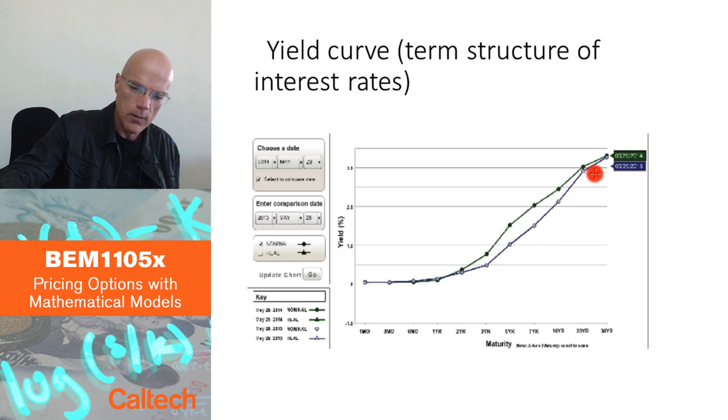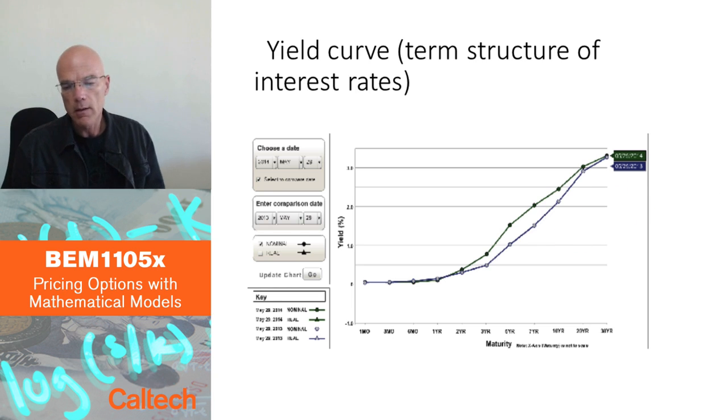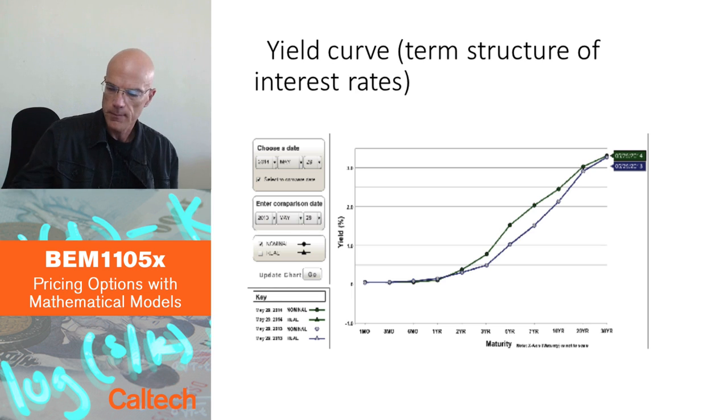This whole curve will be something today and something different tomorrow. So you have to model the whole curve moving along in time randomly in a way that is consistent with each other. You don't want to have arbitrage between bonds with different maturities. So it has to be carefully done. We will do that towards the end of this course. That's the yield curve.